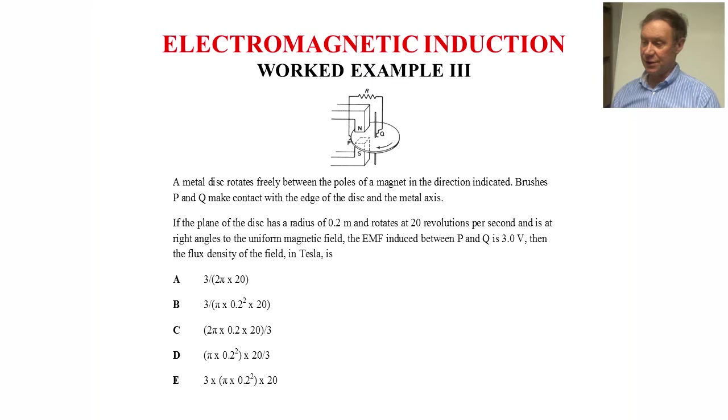Finally, worked example three. This is a disk generator type of question. A metal disk rotates freely between the poles of a magnet in the direction indicated, between the poles P and Q. If you make contact with the edge of the disk and the metal axle.